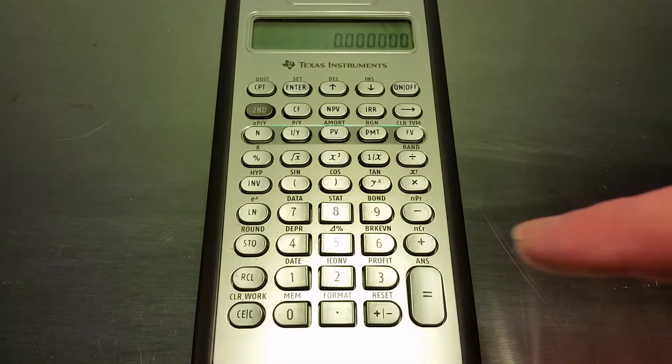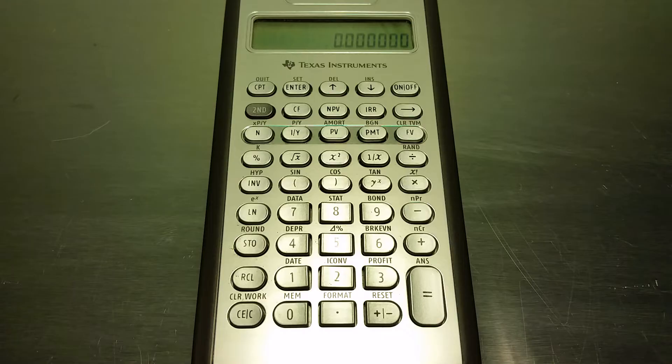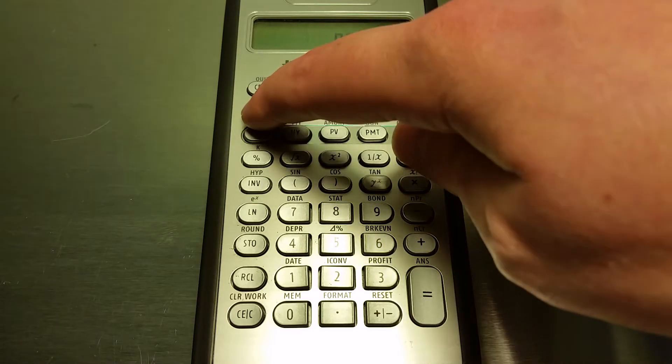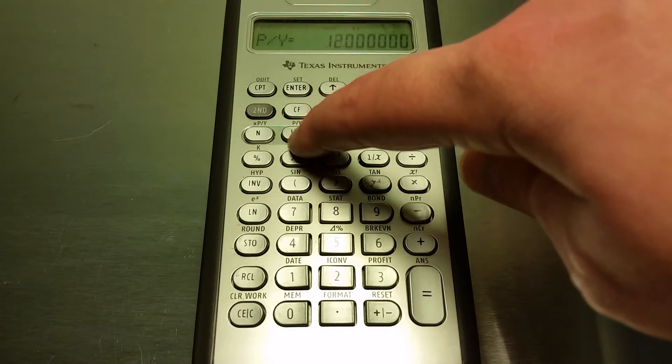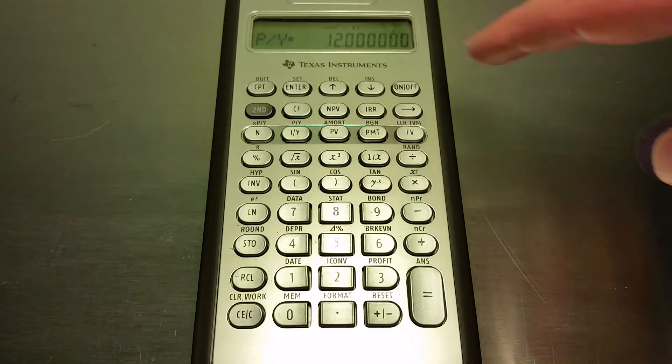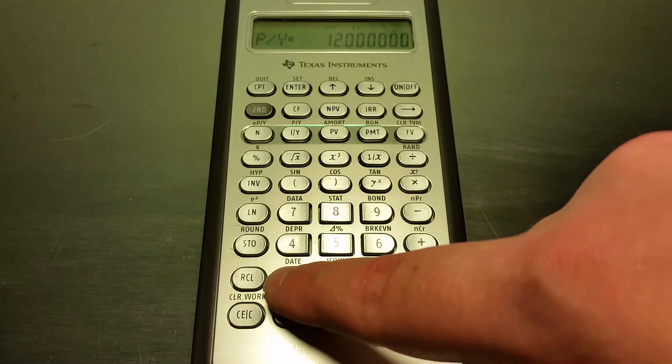The next thing we're going to want to do is make sure that our calculator is set to assume that only one payment per period or per year. Most financial calculators assume monthly payments, 12 per year, unless you say otherwise. To change this, we click second and then the interest rate button. You can see we're currently at 12, so to change this to one payment per period we enter one, click enter, and now we're set up and ready to go.